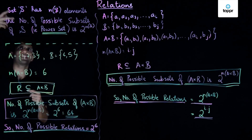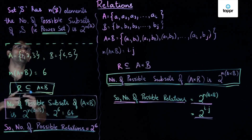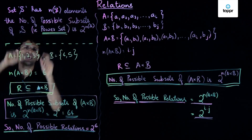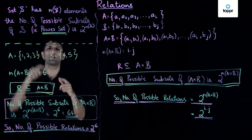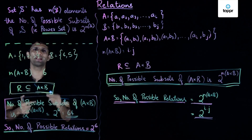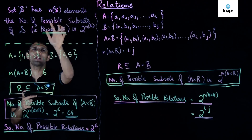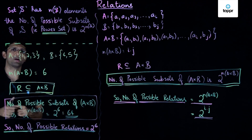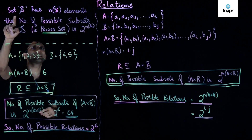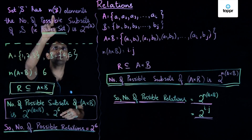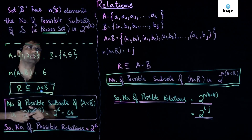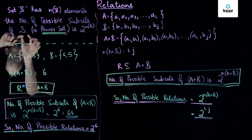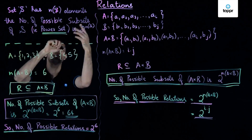We will borrow a result from set theory: if a given set S has n(S) elements, then the number of elements of that set is denoted by n of S, which is also the cardinality of that set. Assuming the set S has n(S) elements, the number of possible subsets of S is equal to 2 raised to n(S).